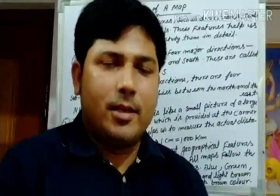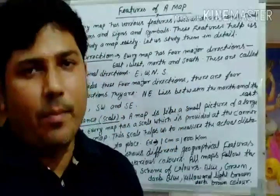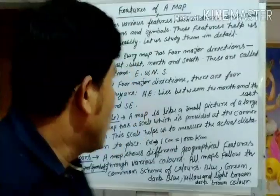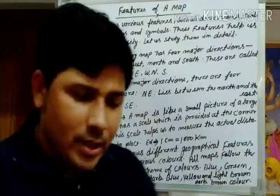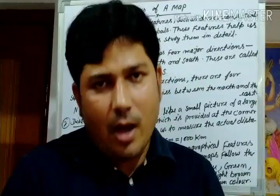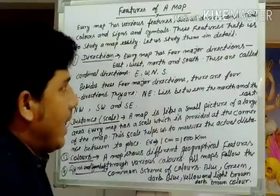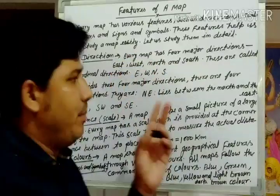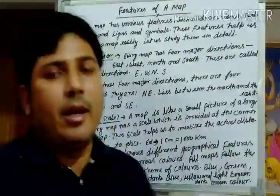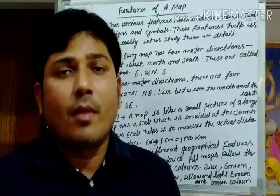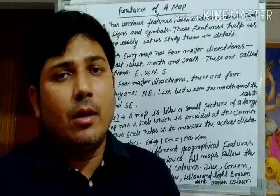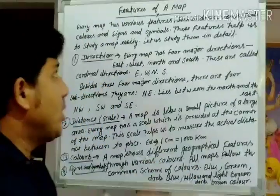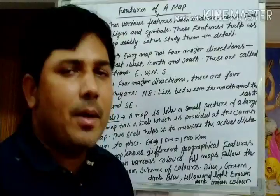Good morning students. Our next topic from the second chapter is map-related: features of a map. Features of a map are characteristics of a map. Every map has various features such as directions, scale, color, and signs and symbols. We have different types of maps like political maps and thematic maps, each with special and unique features.